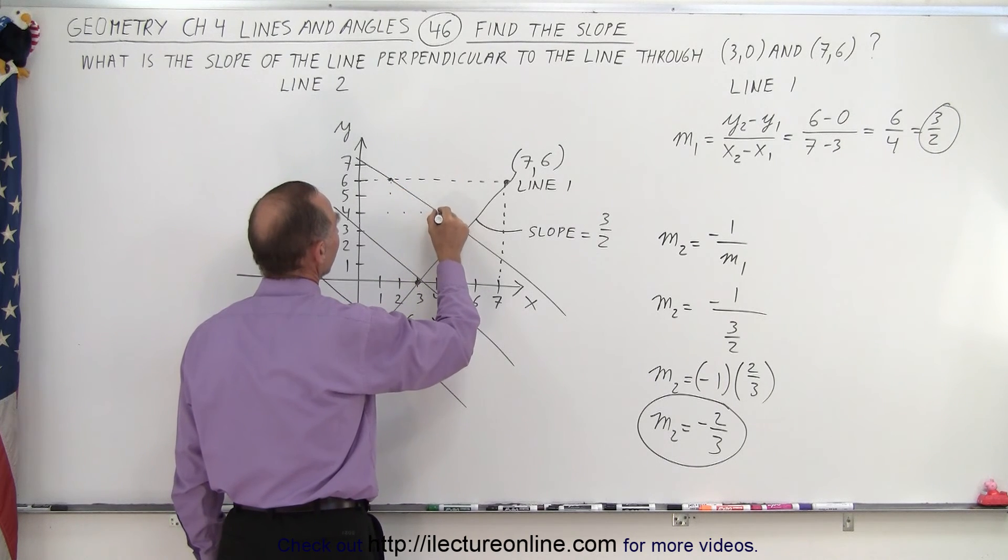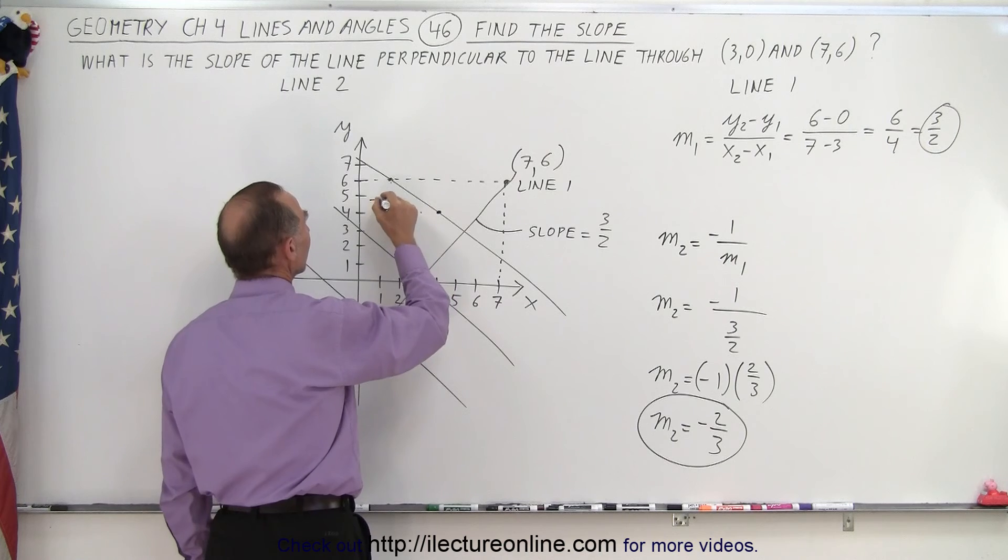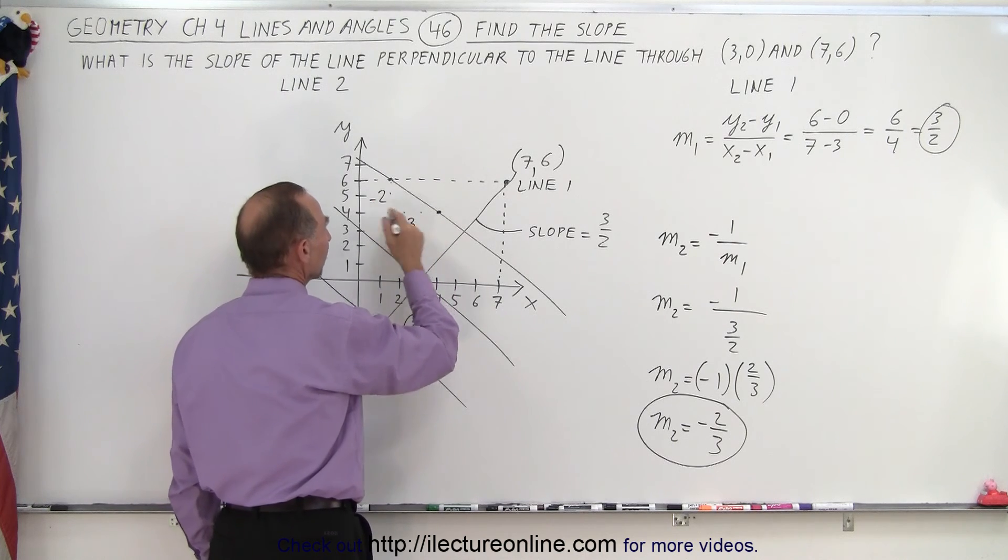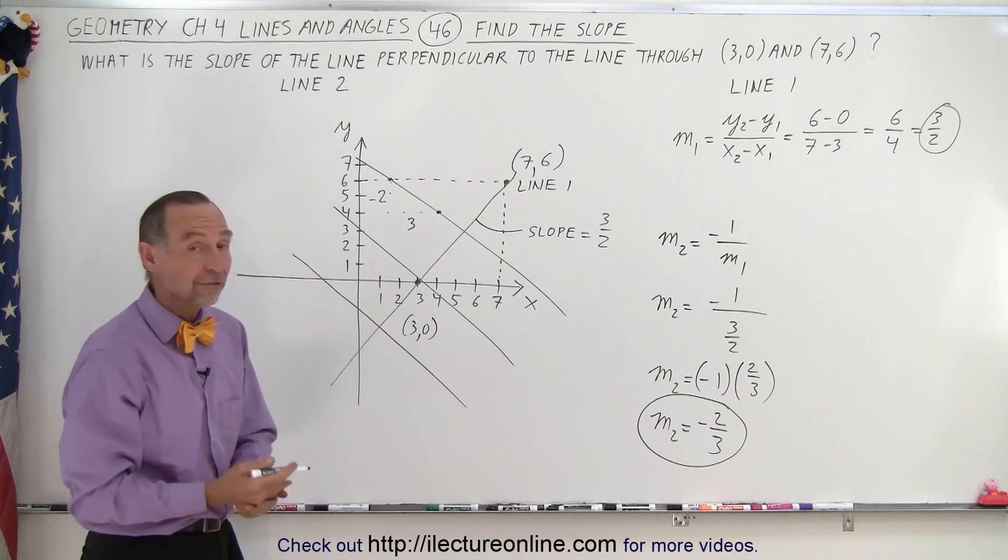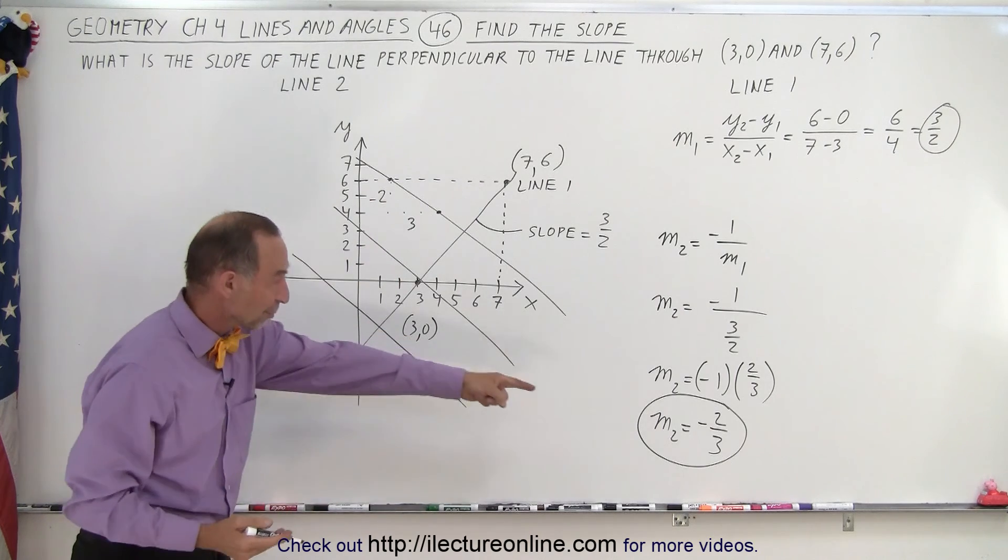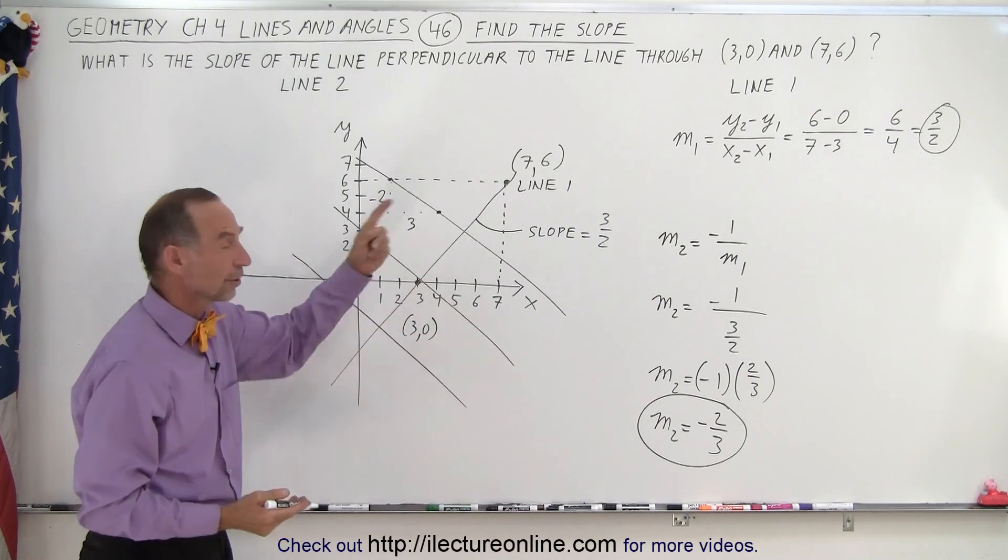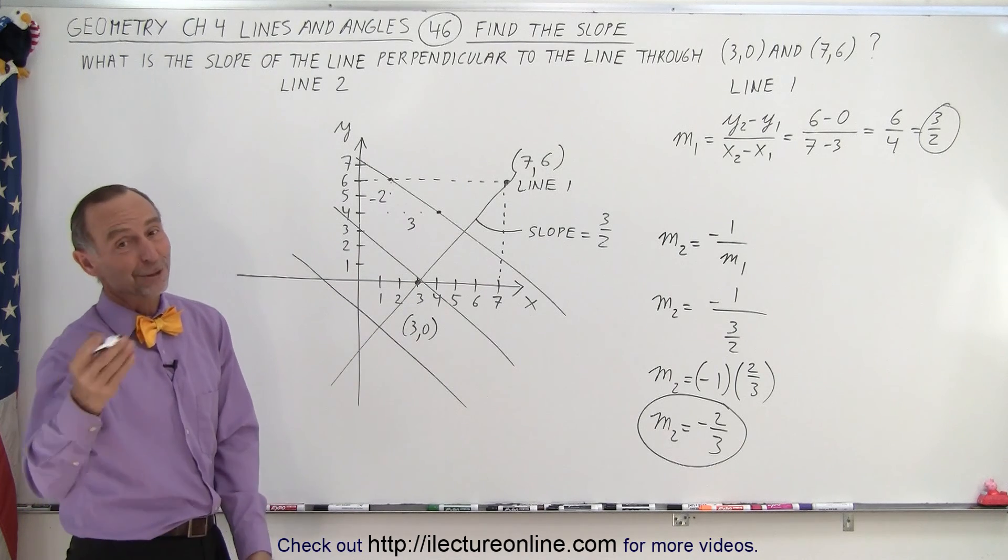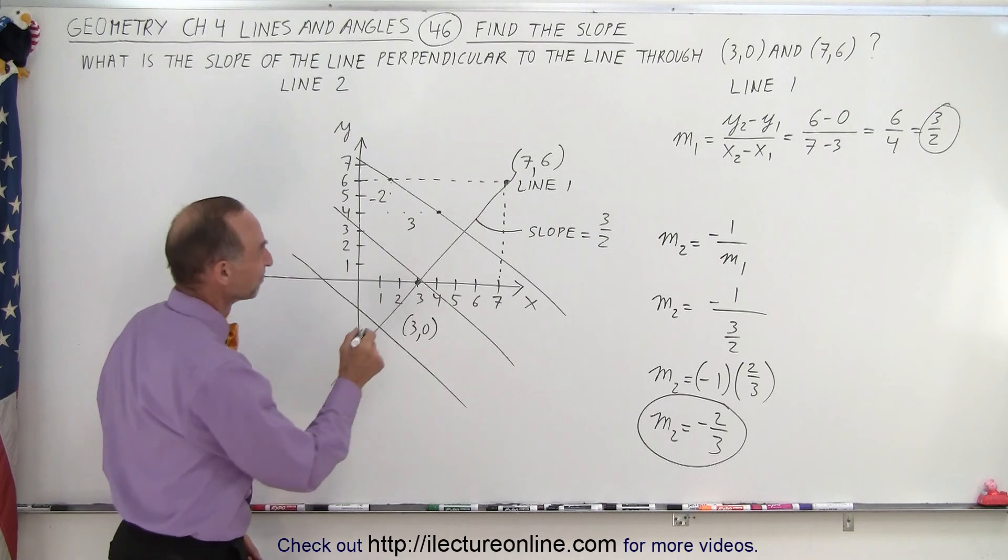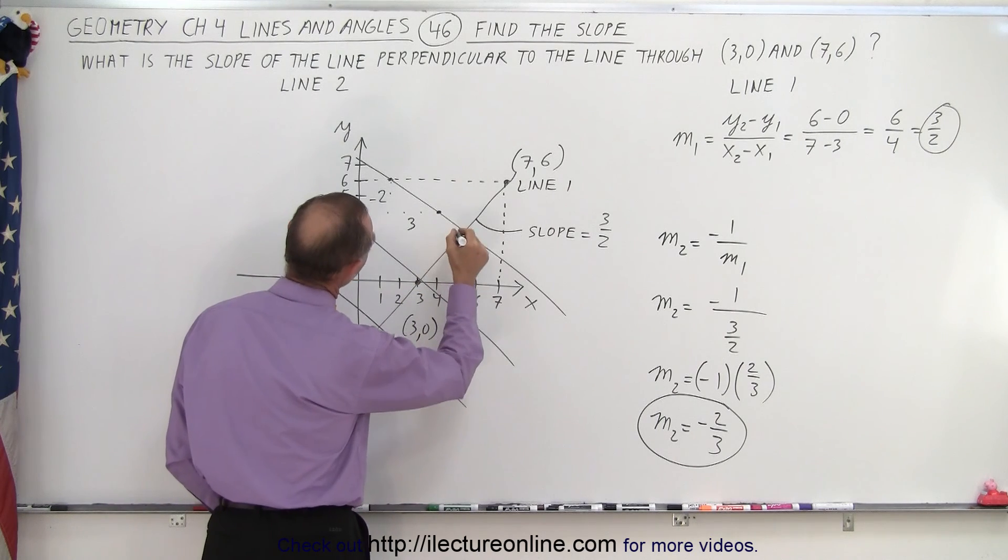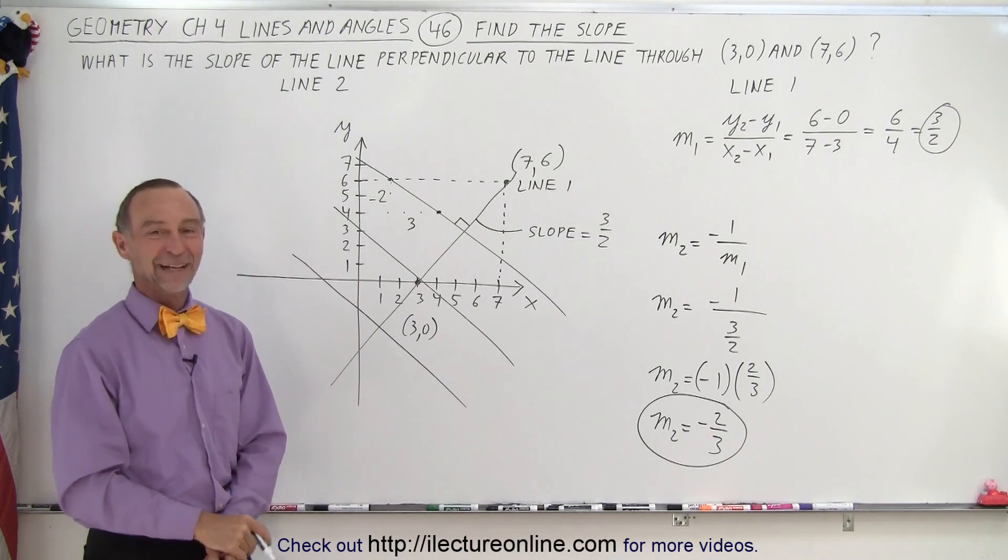So you can see that this is negative 2 for the drop, a positive 3 for the run. And therefore, yes, it does appear as if any of those lines have the appropriate slope to be perpendicular to line 1. So there we go. There's our visualization. Where are we? Right here. Perpendicular. There we go. Thank you.